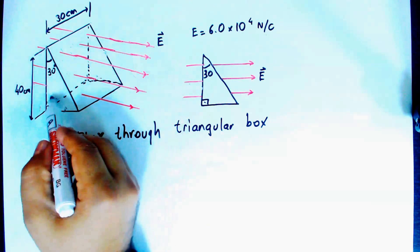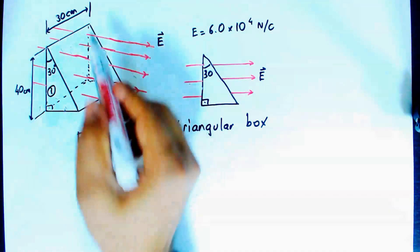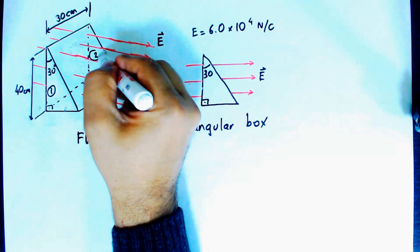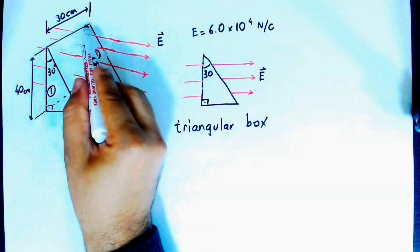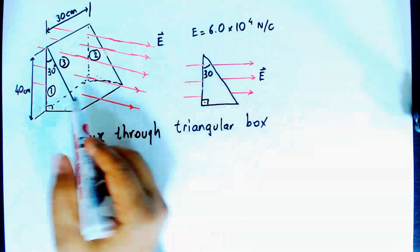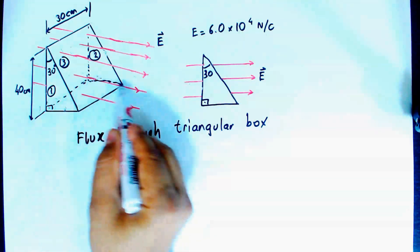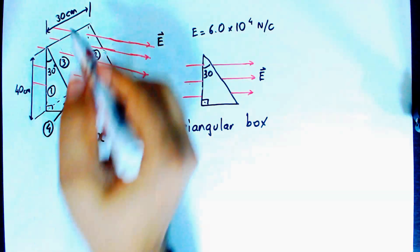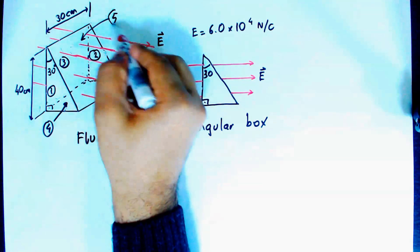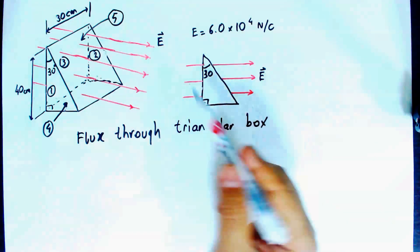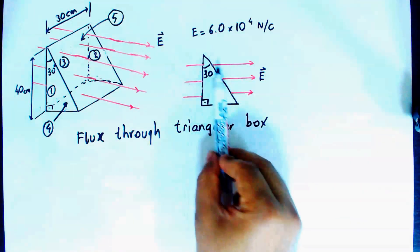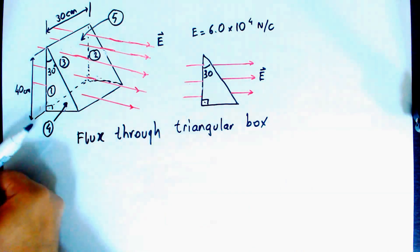Let's name these faces. The right triangular face is face one, the other equivalent right triangular face is face two, this rectangular face is face three, the bottom rectangular face is face four, and the slanted inclined rectangular face is face five. The box consists of five faces. We have a uniform electric field of magnitude 6×10⁴ N/C.